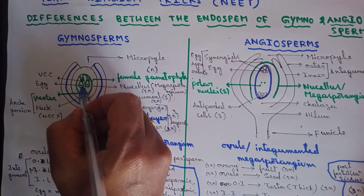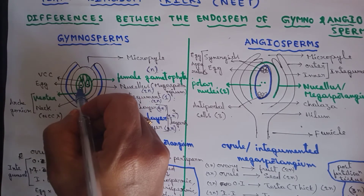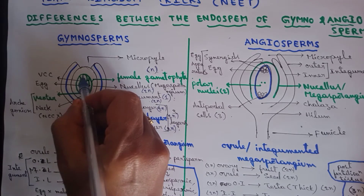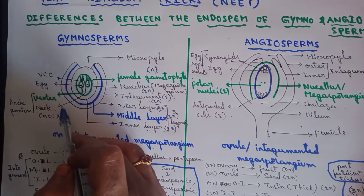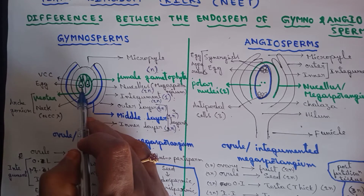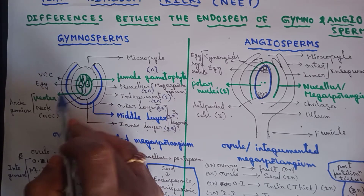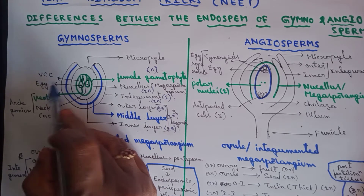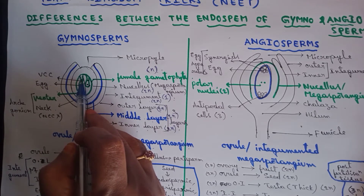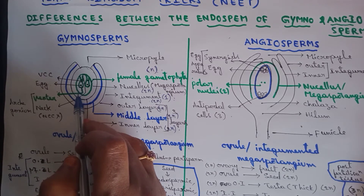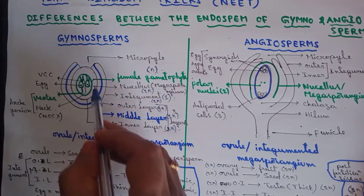Inside this female gametophyte, two or more archegonia are formed. Each archegonium consists of two parts: the neck and the basal bulged part called the venter. Inside the venter there is an egg, and just above the egg there is also a venter canal cell. Two or more archegonia are present. That is the structure of the ovule.